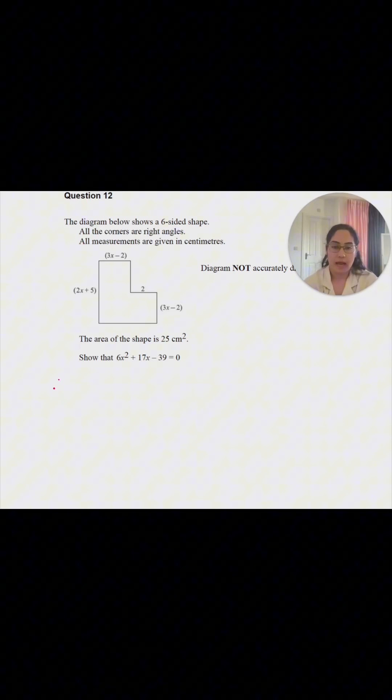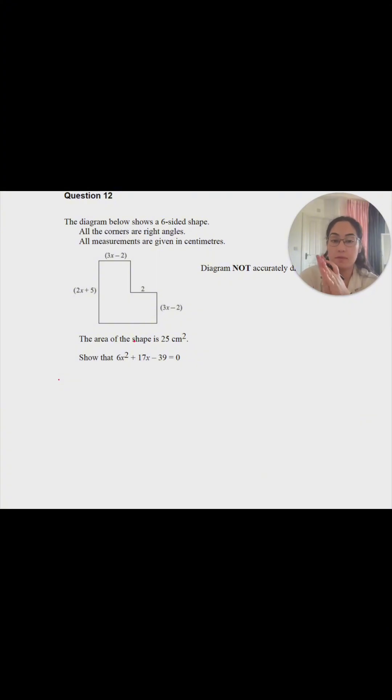I have a compound shape and I know the area is 25 cm². I need to find what the area would be in terms of the algebraic terms that I have. First, I'm going to split this shape into parts so it makes more sense to me and I can find the area of each.